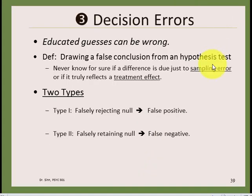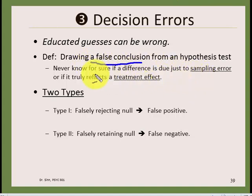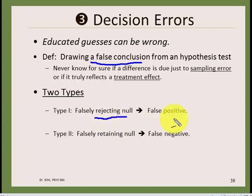The third and final concept for this lecture is decision errors — what happens when you make a decision after hypothesis testing. You can draw a false conclusion because you never know for sure if a difference is really due to sampling error or a true treatment effect. There are two types of errors: Type I is falsely rejecting the null (a false positive), and Type II is falsely retaining the null (a false negative).